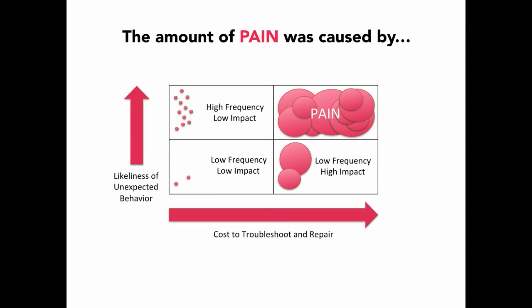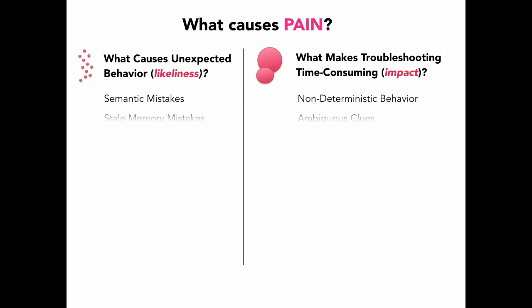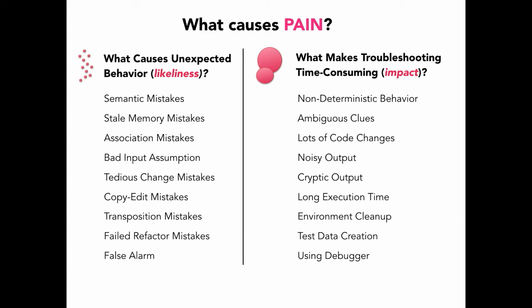The amount of pain was driven by two factors: the likelihood of unexpected behavior and the cost to troubleshoot and repair the problems. And if I wanted to understand what was causing this pain, I needed to understand the things causing these two factors. I started breaking down the problems into categories, and what I found was really interesting — most of my pain was actually caused by human factors as opposed to problems in the code.